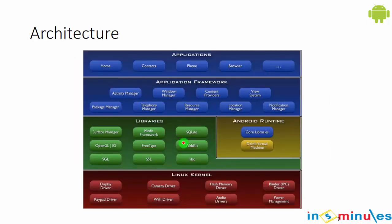Now let's understand how the Android architecture works. The Android architecture has layers: applications used by the user at the top, followed by the application framework, then libraries, Android runtime libraries, and finally the Linux kernel at the core. Yes, Android is built on the Linux core.